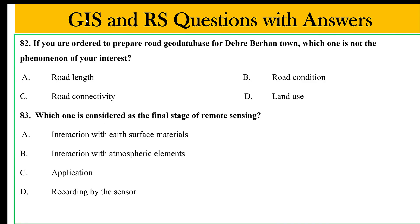If you are preparing a road database, which one is not the phenomenon of your interest to be in the database? The assignment piece of the assignment includes the network. If the city does not assign the data, this gives you the control. There is a number of road links and connectivity, road conditions, and road conditions due to damage. The one described in this perspective is land use.